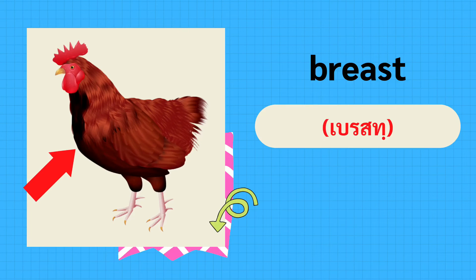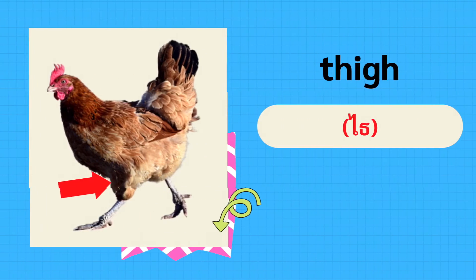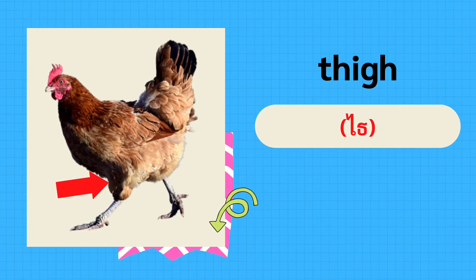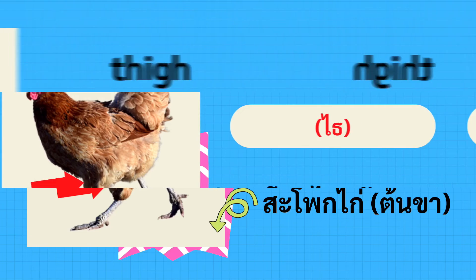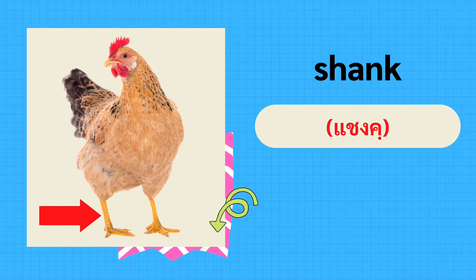Breast — อกไก่. Thigh — สะโพกไก่ หรือต้นขาของไก่. Shank — แชงค์.